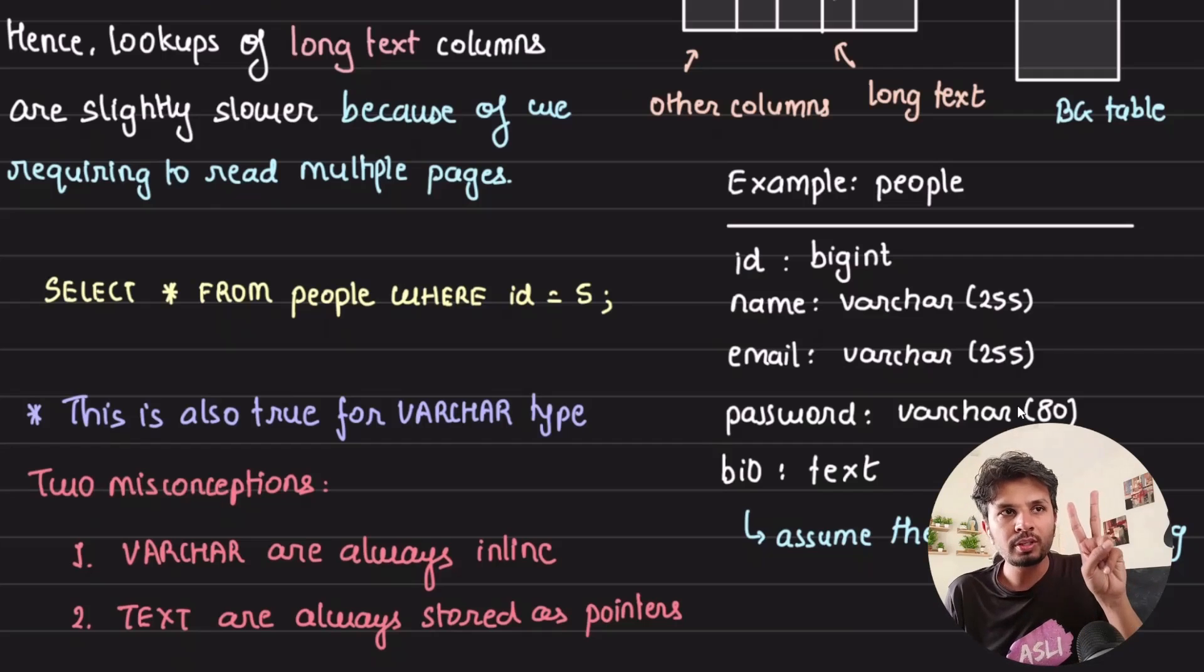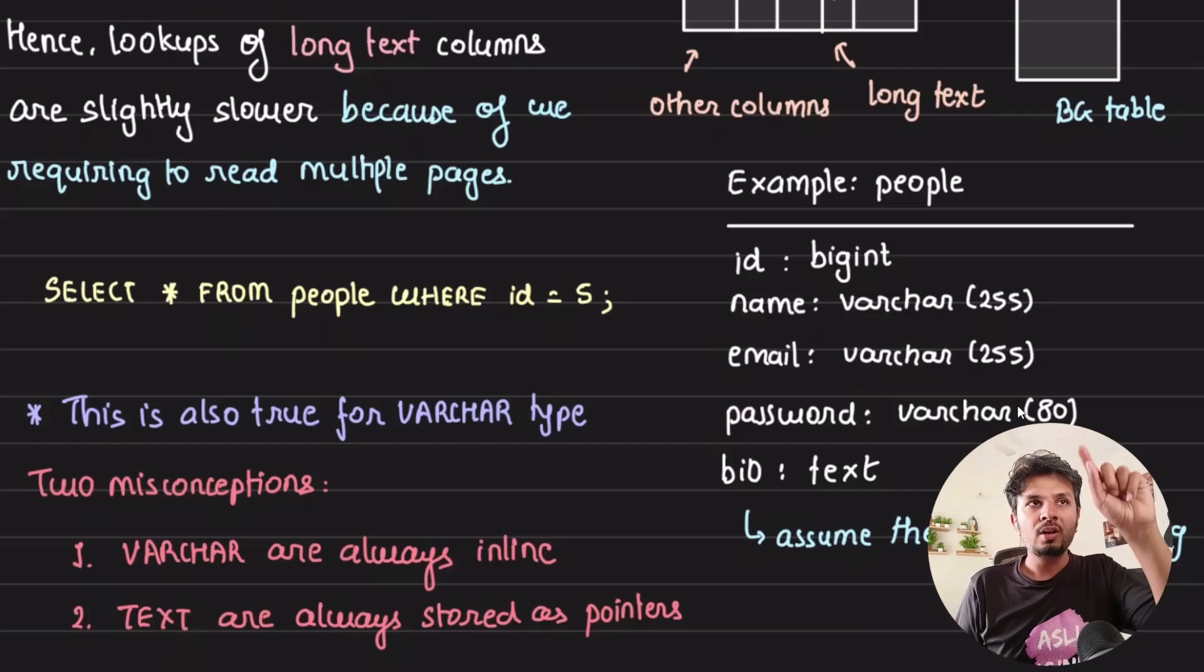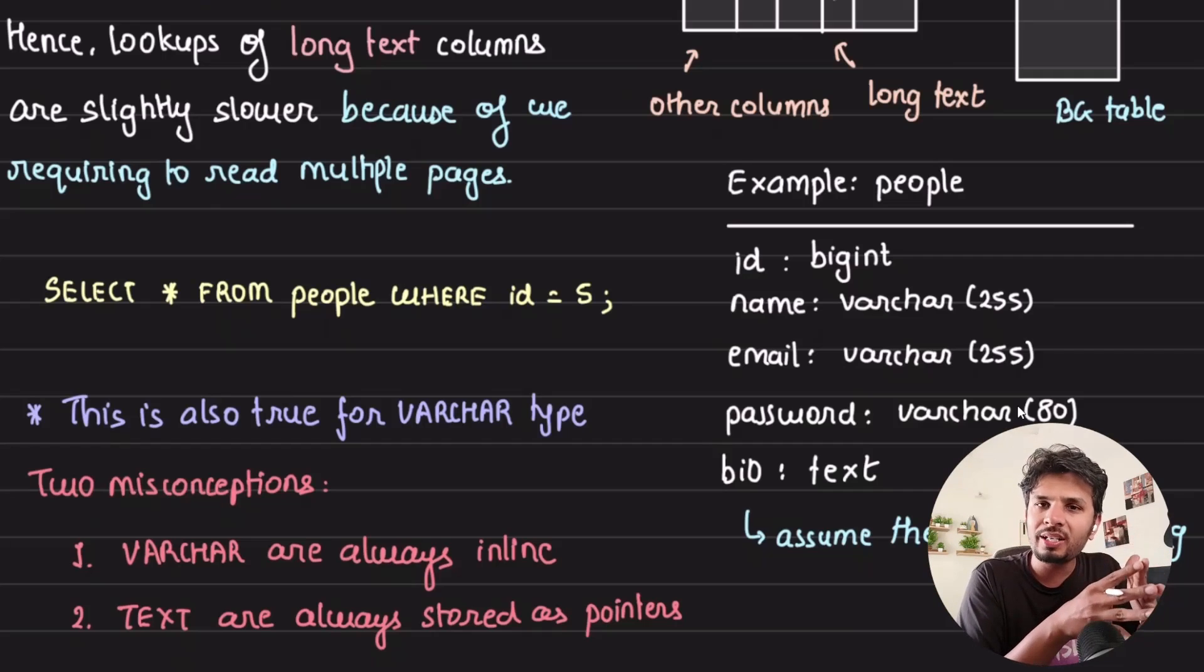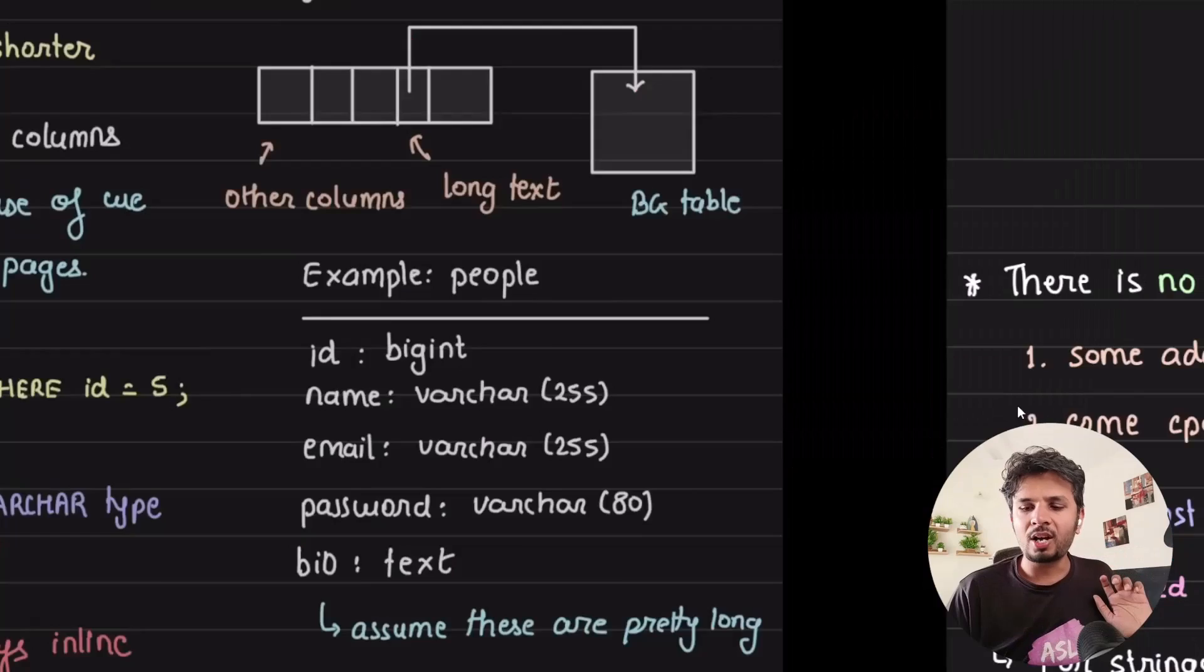To summarize two key misconceptions: whatever we discussed about text also holds true for varchar. If a varchar is long enough which is prolonging the length of your row, then the varchar is also stored on a separate disk page and a pointer is stored. And on text, if your text is small enough, it can be stored inline by your database and not always be referenced as a pointer.